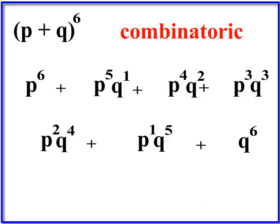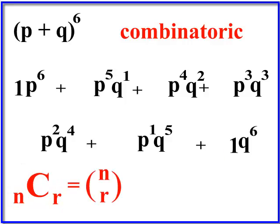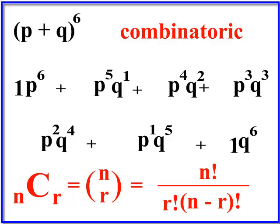Let's do way two, called combinatorics or combination. This is the method where you do n choose r using a combination from mathematics. It's also written as n choose r, and this is the formula. The exclamation point means factorial — you multiply all the way down to one. For example, four factorial is four times three times two times one.